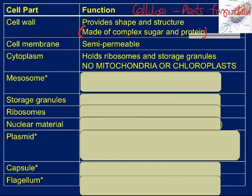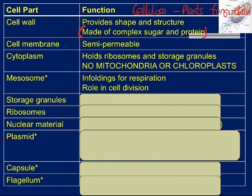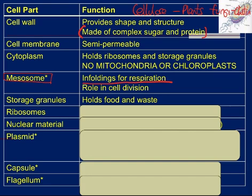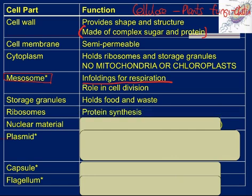The mesosome - marked with an asterisk for sometimes present - is just these infoldings for respiration, and they also play a role in cell division. In my memory, mesosome has never been asked in an exam in terms of its function, so just be aware of it. Storage granules do what they say on the tin - they hold food and waste. Ribosomes: their job is protein synthesis - we did that in our cell structure chapter.